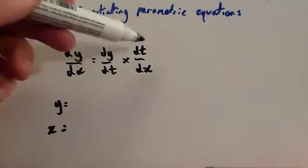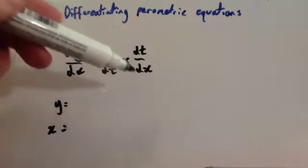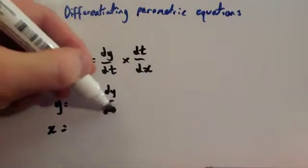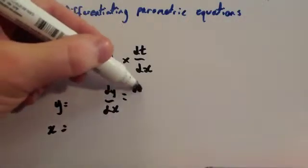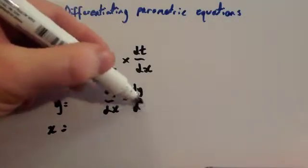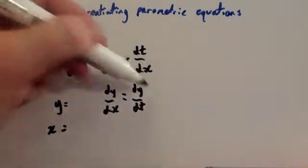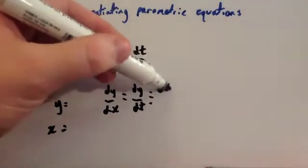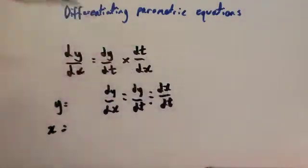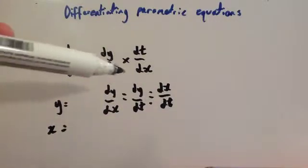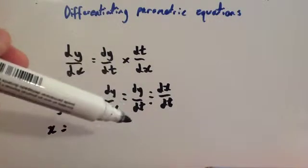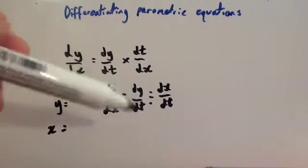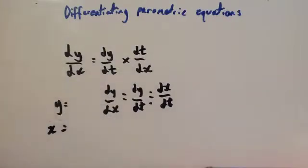It would be much more useful if this was dx/dt. So what we're going to do is write dy/dx equals dy/dt divided by dx/dt. If you want to take the reciprocal, remember we have to change this to divide by dx/dt. So we differentiate y with respect to t, differentiate x with respect to t, divide them, and you'll get dy/dx.